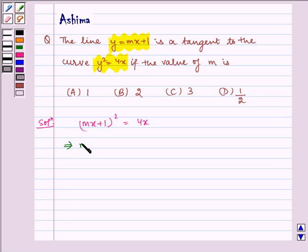Which implies m²x² + 2mx + 1 - 4x = 0. Which implies m²x² + x(2m - 4) + 1 = 0.